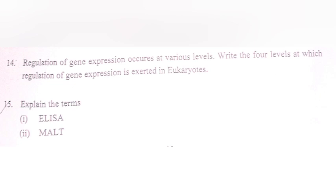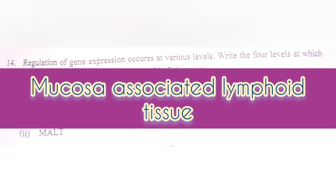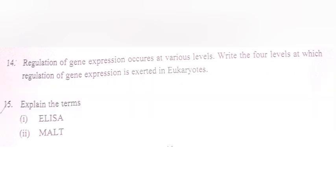Question 15. Explain the terms: 1. ELISA. 2. MALT. Answer: 1. ELISA — Enzyme-Linked Immunosorbent Assay. 2. MALT — Mucosa-Associated Lymphoid Tissue.